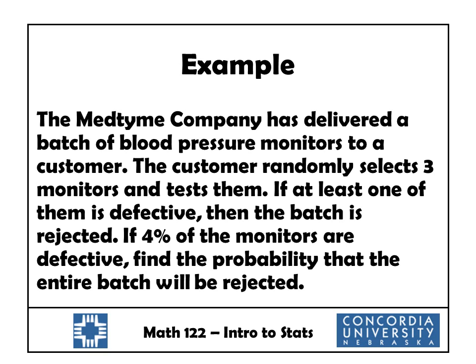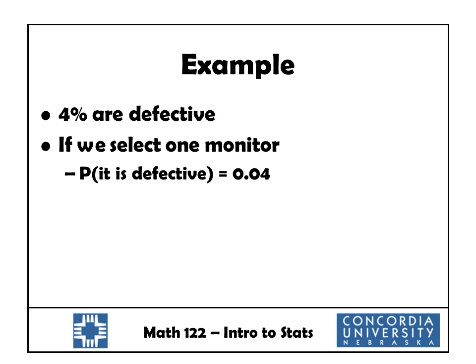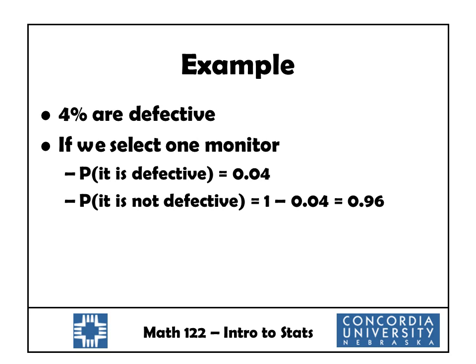The MedTime company has delivered a batch of blood pressure monitors to a customer. The customer randomly selects three monitors and tests them. If at least one of them is defective, then the batch is rejected — this is a commonly used procedure called acceptance sampling. If four percent of the monitors are defective, find the probability that the entire batch will be rejected. We might be tempted to say the probability is 0.04 because four percent are defective, but as we'll see, the probability is actually much higher than four percent. If four percent are defective, then the probability that a selected monitor is defective is 0.04, and the probability it is not defective is 1 minus 0.04, which is 0.96. Note that 'not defective' is the complement of 'defective.'